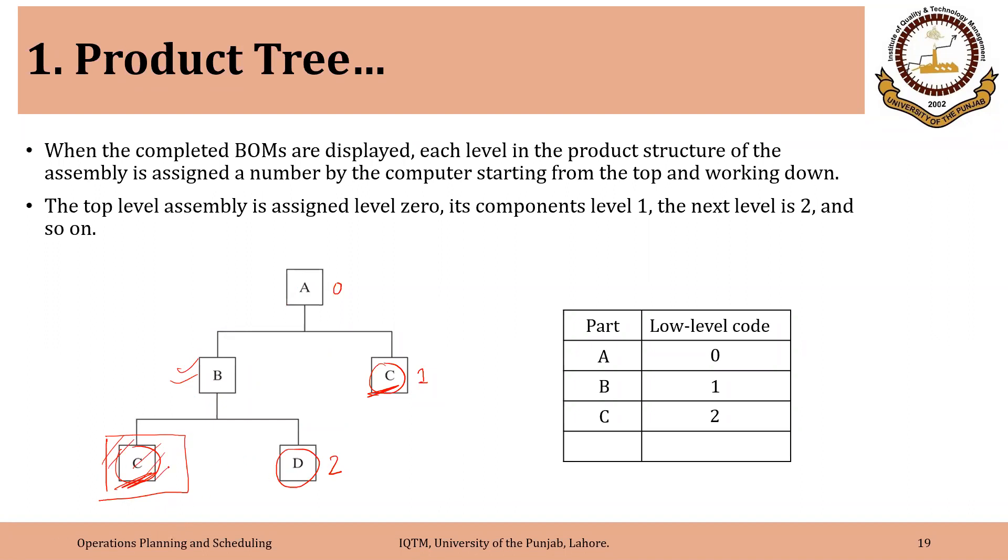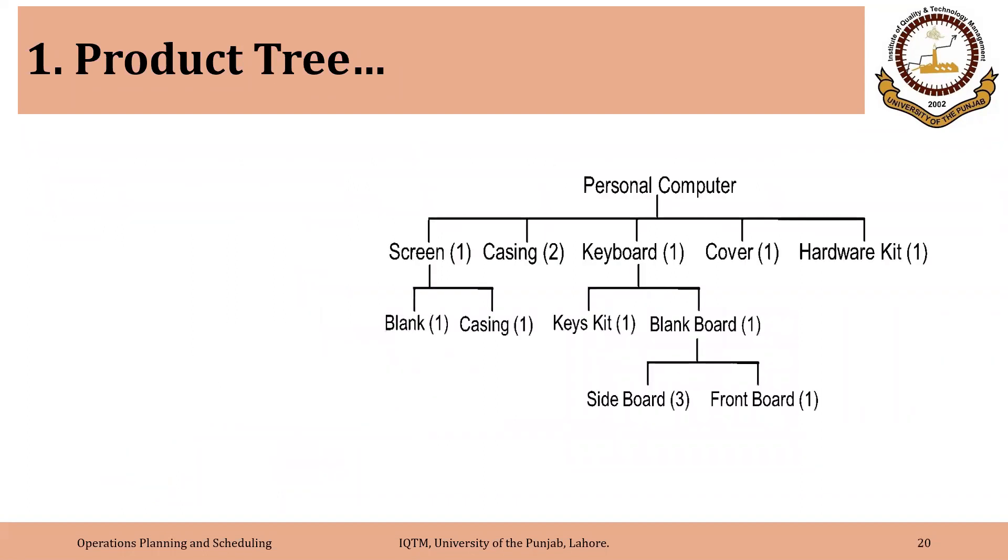So as we discussed, this product structure also shows us the sequence of assembling the product. So first it is to be assembled with D and then it is to be assembled with C. So C has a level 2 and D also has a level 2. And I repeat that for the sake of simplicity we are having the one digit code, but it could be two or three digit code as well.